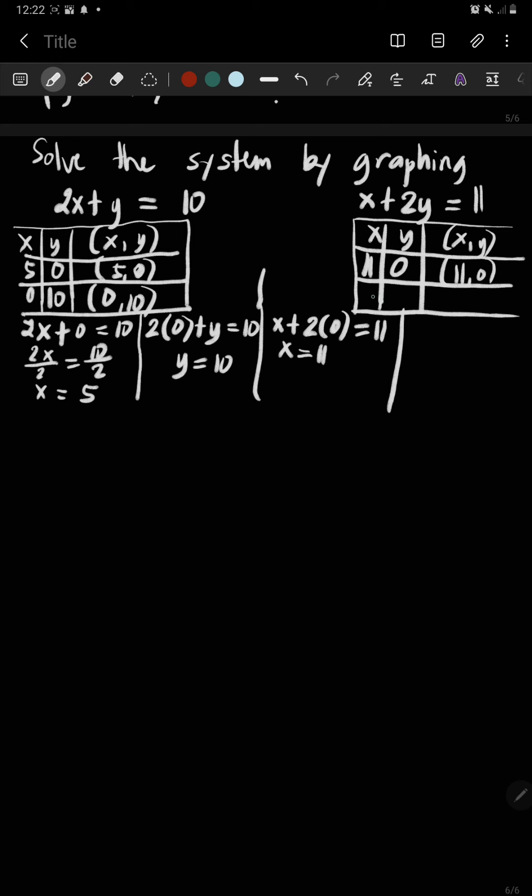You find your y-intercept. So your x is 0. Substitute x with 0: 0 plus 2y equals 11. Therefore, you have 2y equals 11. Divide both sides by 2. Therefore, y is 11 halves, that is 5 and a half. So you have ordered pair 0, 5 and a half.